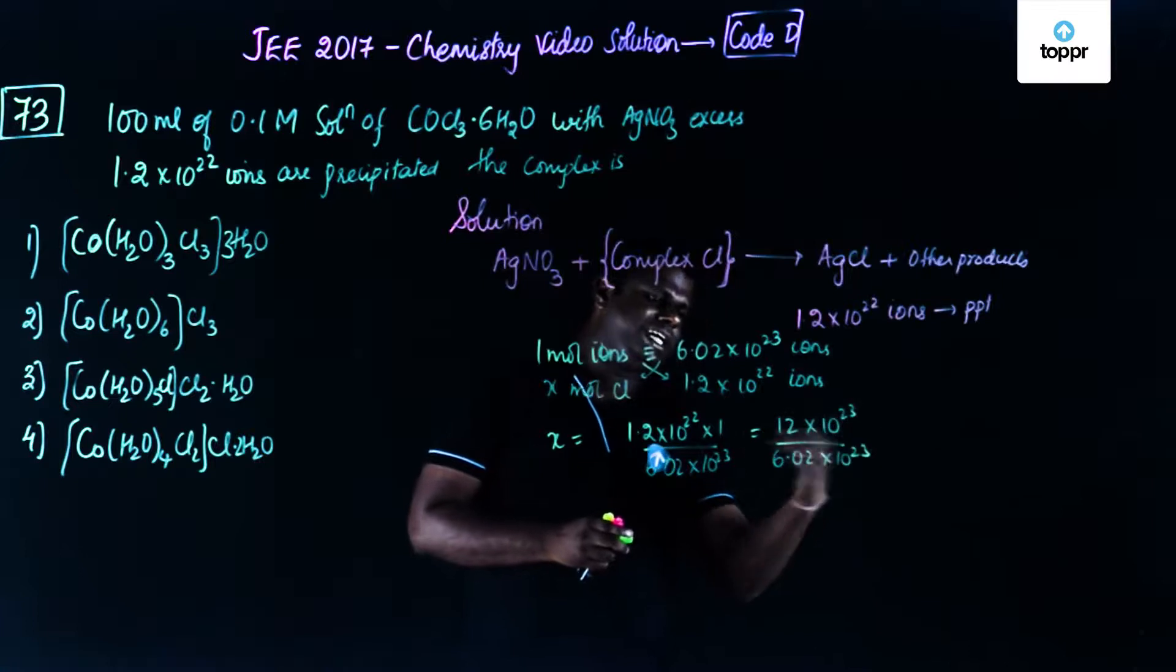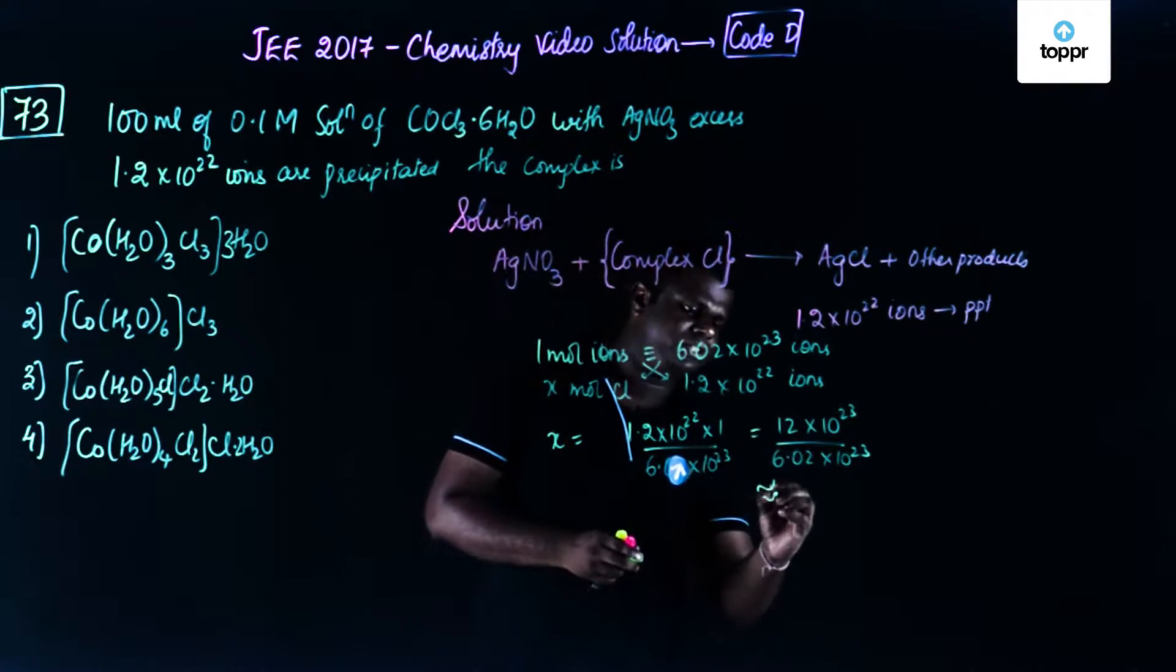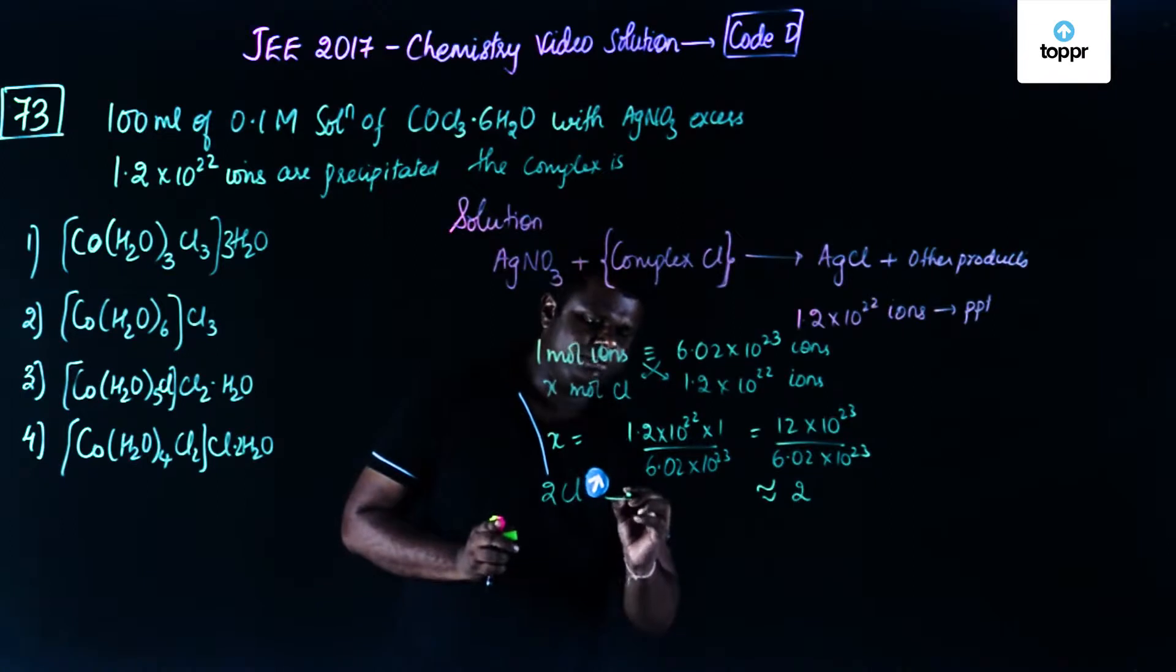Okay, so these two get cancelled and you get something like 1.9. So this approximates to 2. That means there should be 2 Cl ions which is possible when it's going to be Cl2.